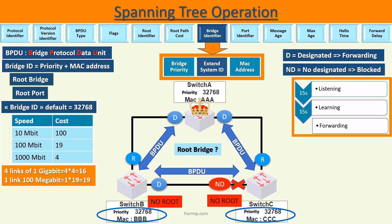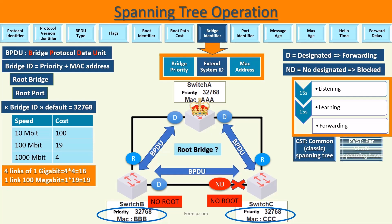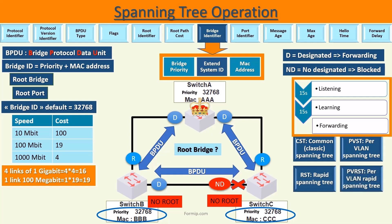We have just seen the spanning tree mechanism, but there is not just one type of spanning tree. We have classic spanning tree, spanning tree per VLAN, rapid spanning tree, rapid per VLAN, and multiple spanning tree. Fortunately, it is not required to know all different types of spanning tree for the CCNA, but we will see next those you need to know.